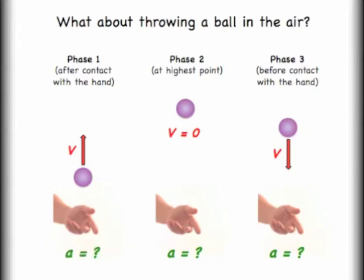Okay, now that I've given you a little bit of time, let's go ahead and see what we've got here for phase one. As the ball is traveling up, after it's left the hand, what is the acceleration? The acceleration is 9.8 meters per second squared down.